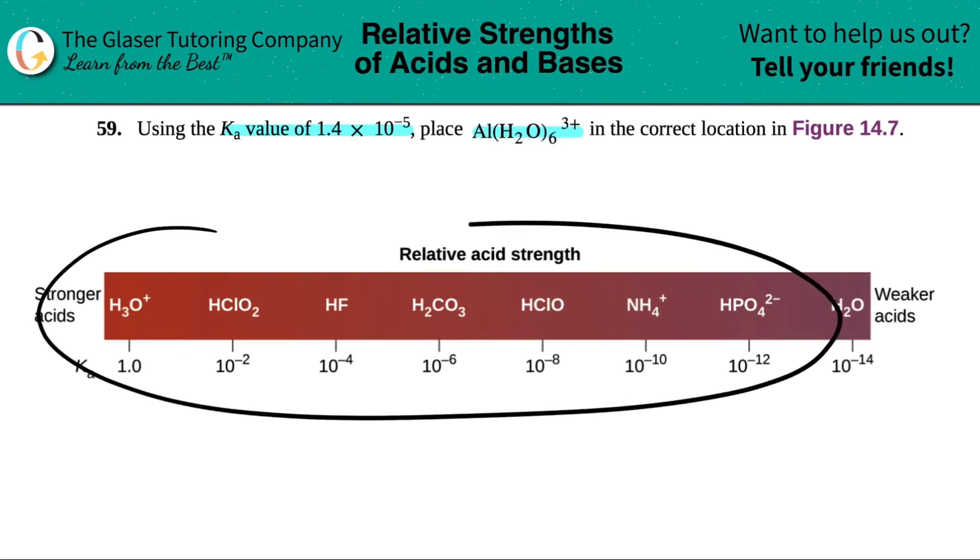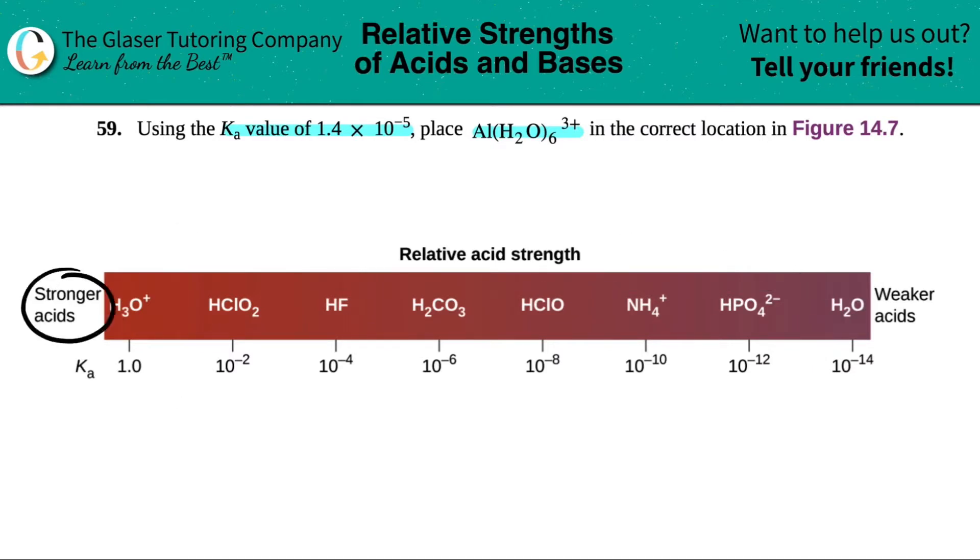So I pulled up figure 14.7 and they give me a list of all these acids on a scale of stronger acids versus weaker acids. So we start at a Ka value of 1 and go all the way to the Ka value of negative 14.